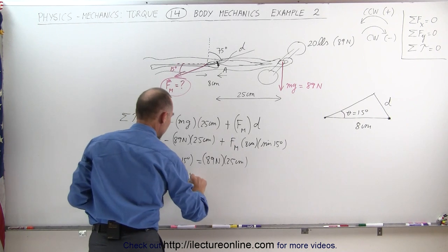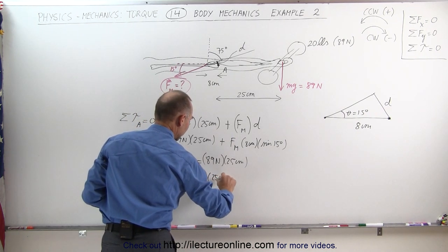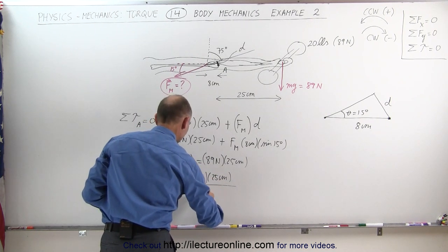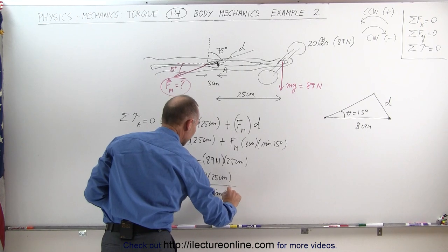So the force required by the muscle equals 89 newtons times 25 centimeters divided by 8 centimeters and divided by the sine of 15 degrees.